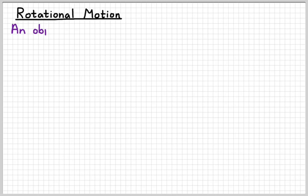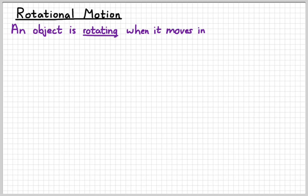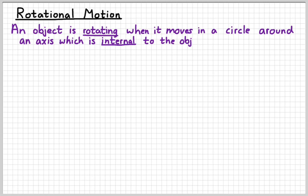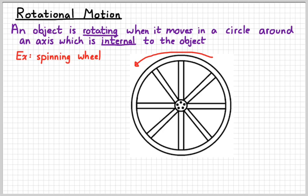So the first thing we might want to know is what exactly does rotation mean? Something is rotating when it's going around in a circle, and the axis of that circle, or center, is internal to the object. So for example, if we have a wheel that is spinning, let's suppose it's spinning counter-clockwise. Since the center or axis of the wheel is inside the wheel itself, we would say that it is rotating.